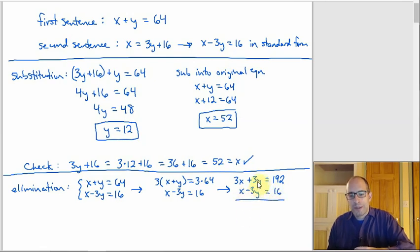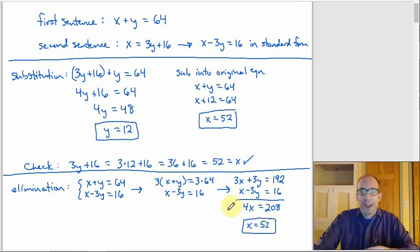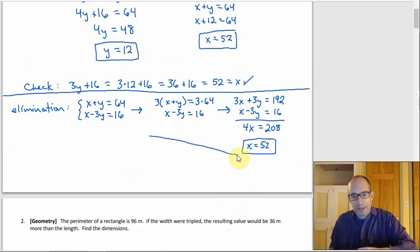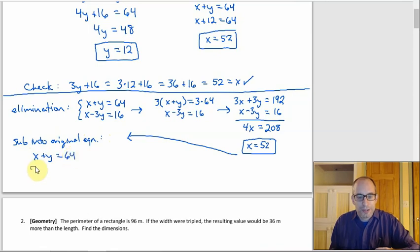208 divided by 4 is 52, so X equals 52 — same as before. Sub into the first equation: 52 plus Y equals 64, so Y equals 12. Same result either way. Whether you prefer substitution or elimination just depends on what you see first — go with your intuition, it'll work either way.